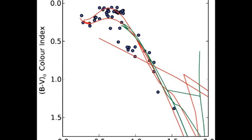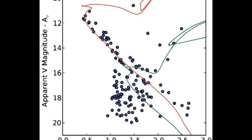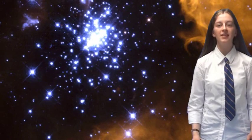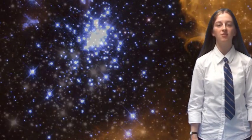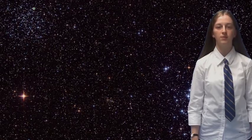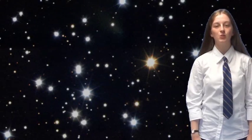They then graph this information as color-color diagrams that help show how much dust and gas there is between Earth and the cluster, and then use color-magnitude diagrams to determine the cluster's age, distance, and what it's made of. When this is done for thousands of open clusters, we get a picture about the history of star formation in our galaxy and about how individual stars evolve.